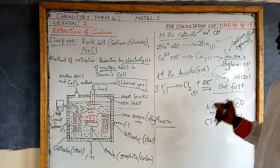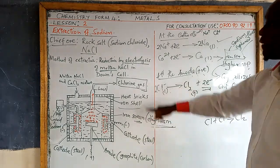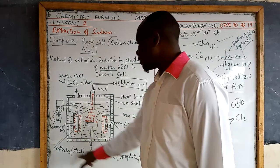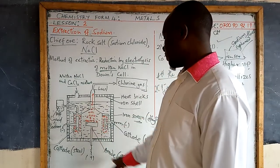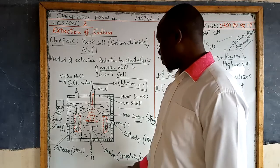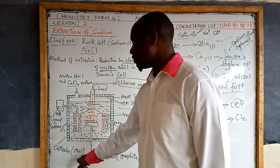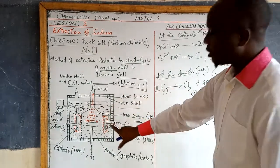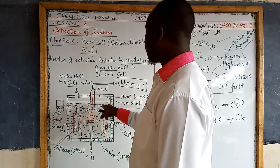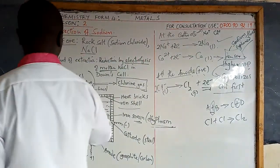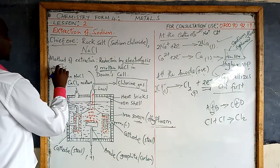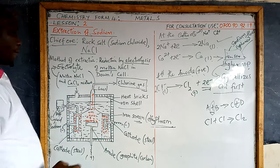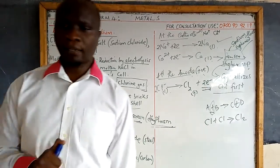The important and most examinable areas to pay attention to are: identifying the chief ore, which is rock salt (sodium chloride); identifying the anode and cathode and the materials they are made of. The anode is made of graphite because graphite does not react with chlorine — it is inert. The cathode is made of steel, which does not react with sodium ions. The heat bricks are used to maintain high temperatures so that the electrolyte — the molten mixture — does not solidify. Also important are the equations for the reactions at each electrode.